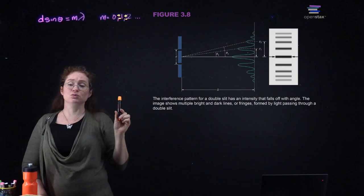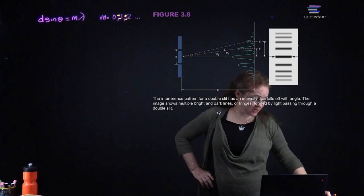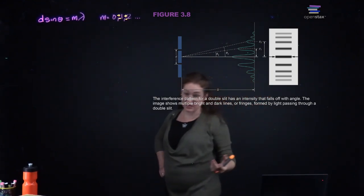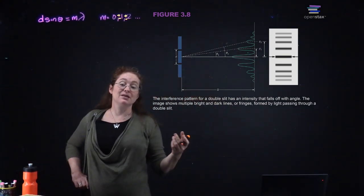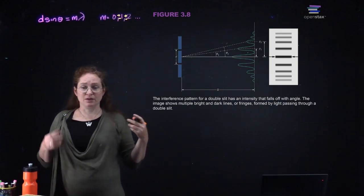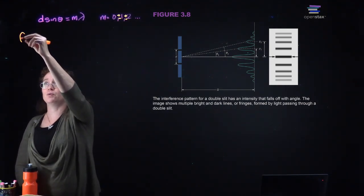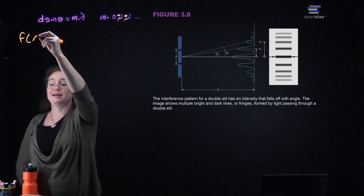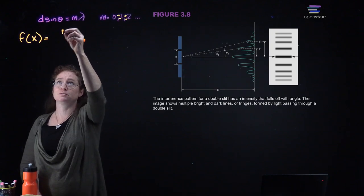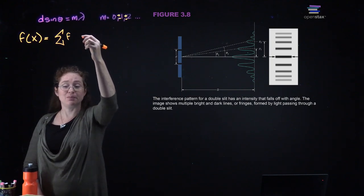We're going to use the small angle approximation. You should have seen a Taylor series in your calculus course. A Taylor series approximates a function as the sum of different constants times a polynomial — specifically the nth derivative of the function evaluated at the expansion point, times (x minus x-naught) to the power of n, summed from n equals zero to infinity.